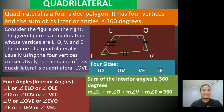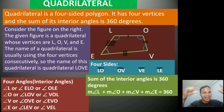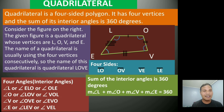Also, the four sides of a quadrilateral are named using segment notation — a straight line over the two letters with no arrowhead. The four sides are segment L-O, segment O-V, segment V-E, and segment L-E. These are the four sides of quadrilateral LOVE.